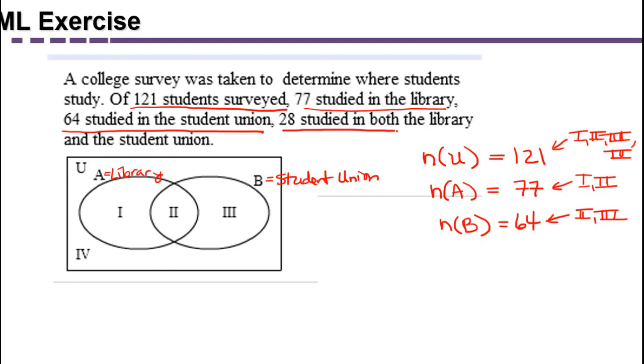And then the last fact is 28 studied in both the library and the student union. So the number in A intersect B. Remember intersection means and.